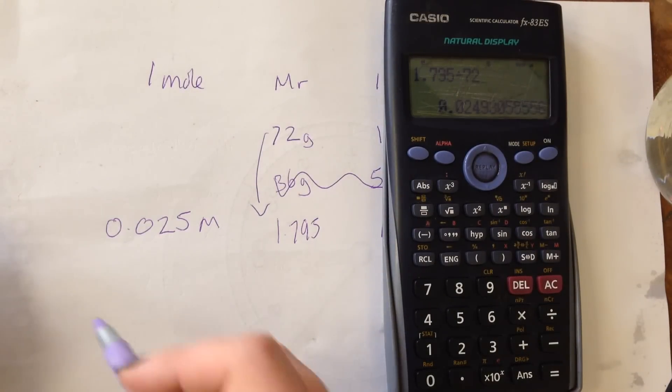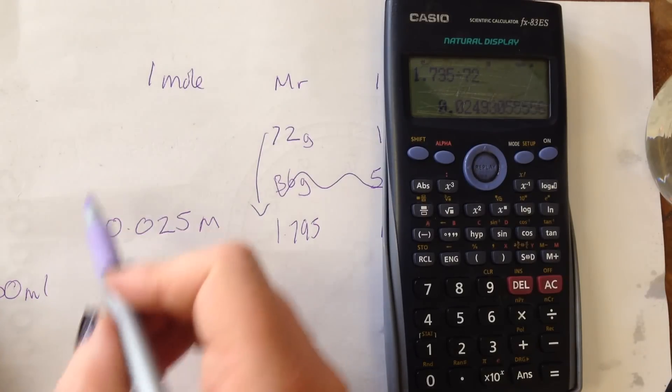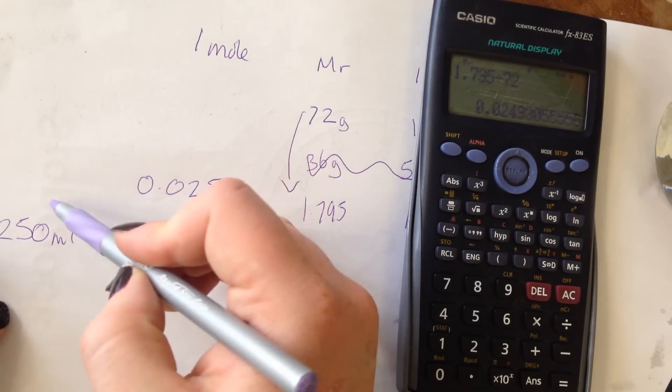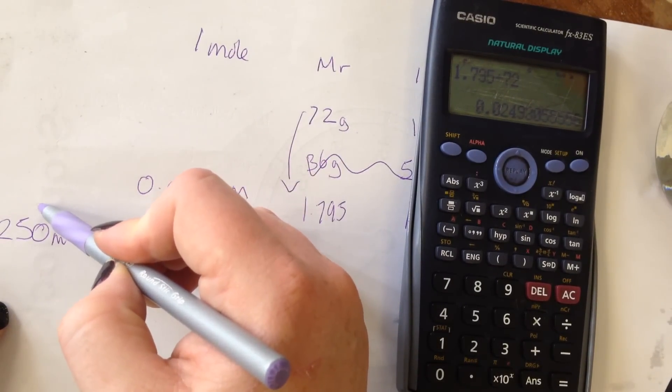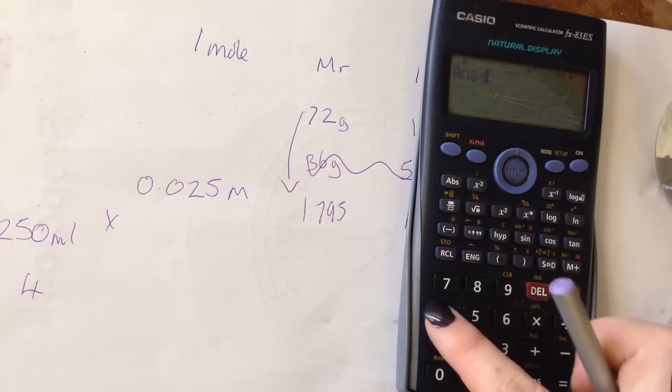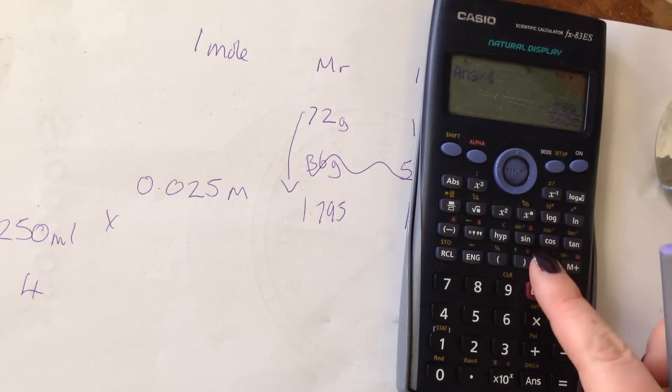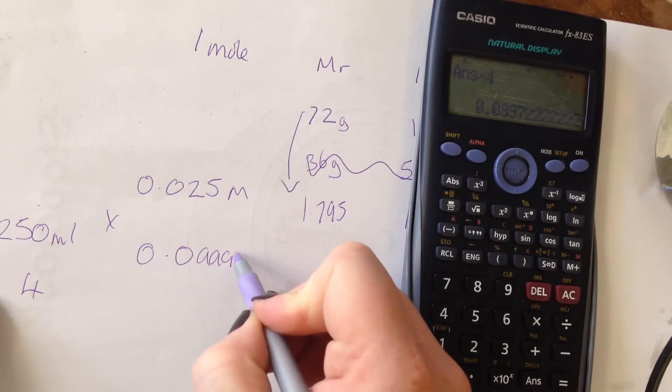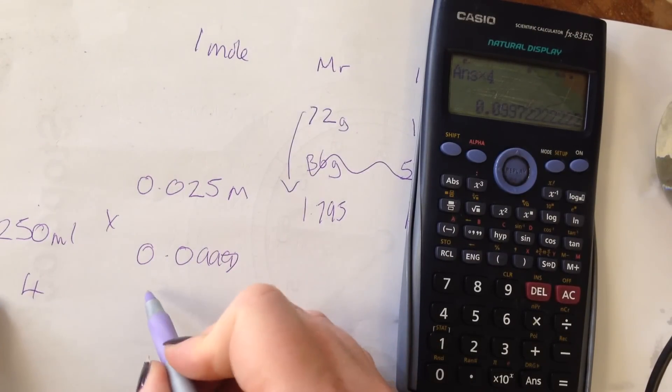But we didn't dissolve it in one liter, we dissolved it in 250 mils. 250 mils into one liter goes four times. So we need to times that number by four. So times that by four gives us a 0.09997. And if we round that up, it's going to give us a 0.1 molar solution, which is exactly what I was aiming to make.